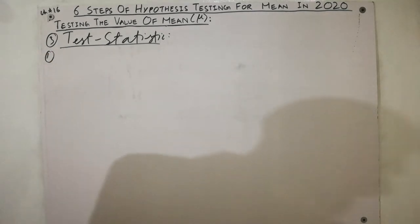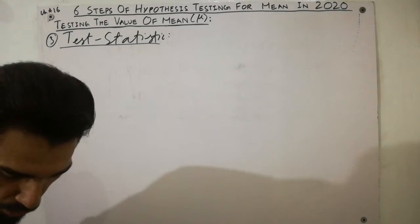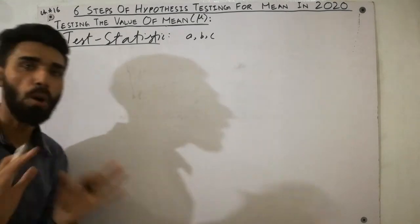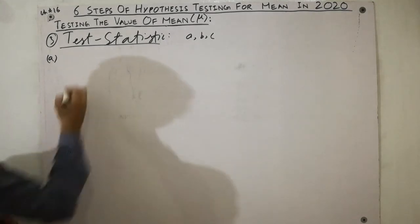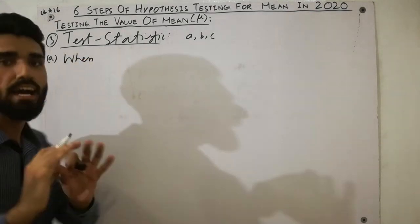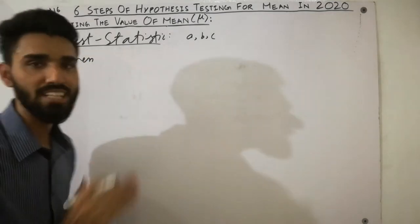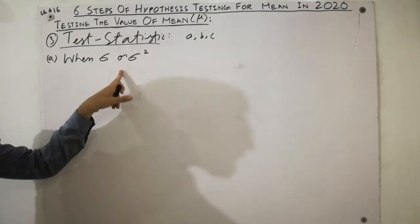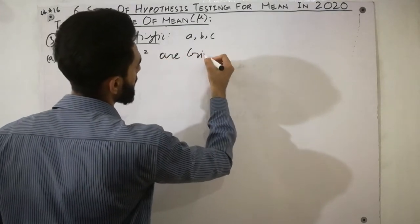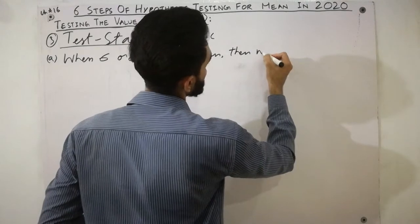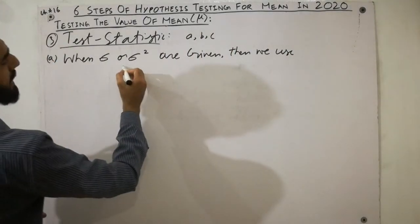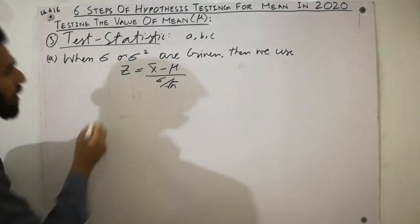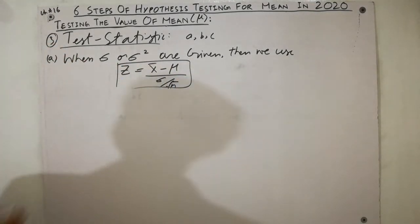Point A: if you face any problem or numerical in hypothesis testing in which sigma (the standard deviation) or sigma-squared (the variance) is given, then we use the Z formula: Z equals x-bar minus mu, divided by sigma divided by the square root of n. This is the Z test statistic when the population standard deviation is known.